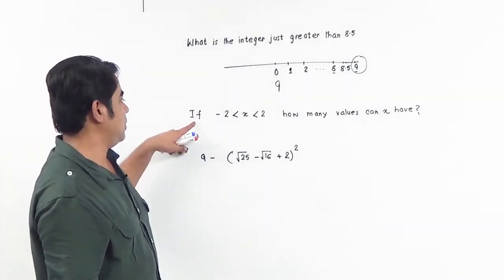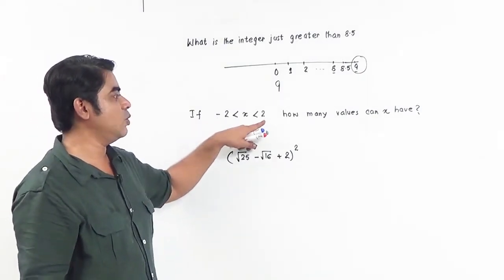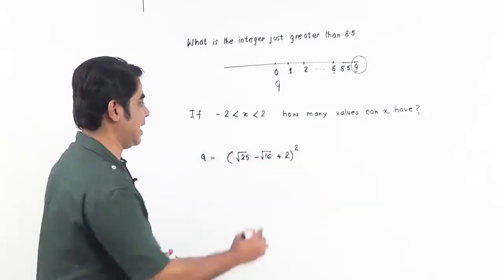Now the next question is: if minus 2 is less than x is less than 2, how many values can x have?